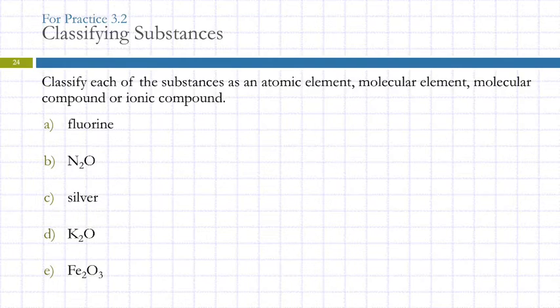We need to be able to classify substances. We're going to get into naming and writing formulas for compounds. We can't do that if we can't identify what category a substance is because the rules are different from molecular and ionic compounds. So let's practice. We're looking for atomic element, molecular element, molecular compound, or ionic compound.